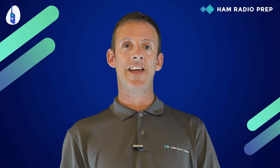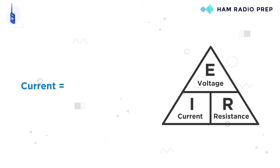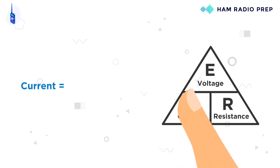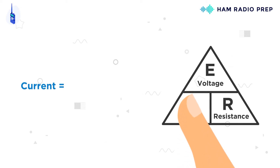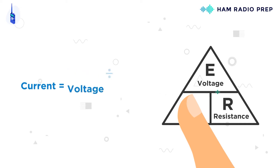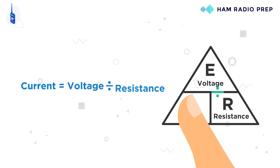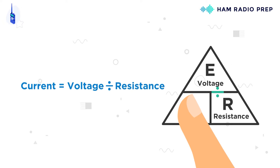Now let's say we want to calculate the current, or I. First, circle the current I. Notice that the voltage E is on top of resistance R, so add a division sign. Now you have your answer: current I equals voltage E divided by resistance R.